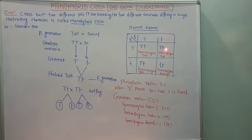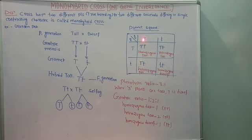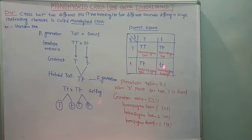Capital T combined with small t forms another Tt — heterozygous tall. Small t combined with small t forms tt — homozygous dwarf. Since small t small t represents the dwarf character, after crossing, a homozygous dwarf plant is obtained. So the dominant gene always expresses itself, while small t does not appear when capital T is present.